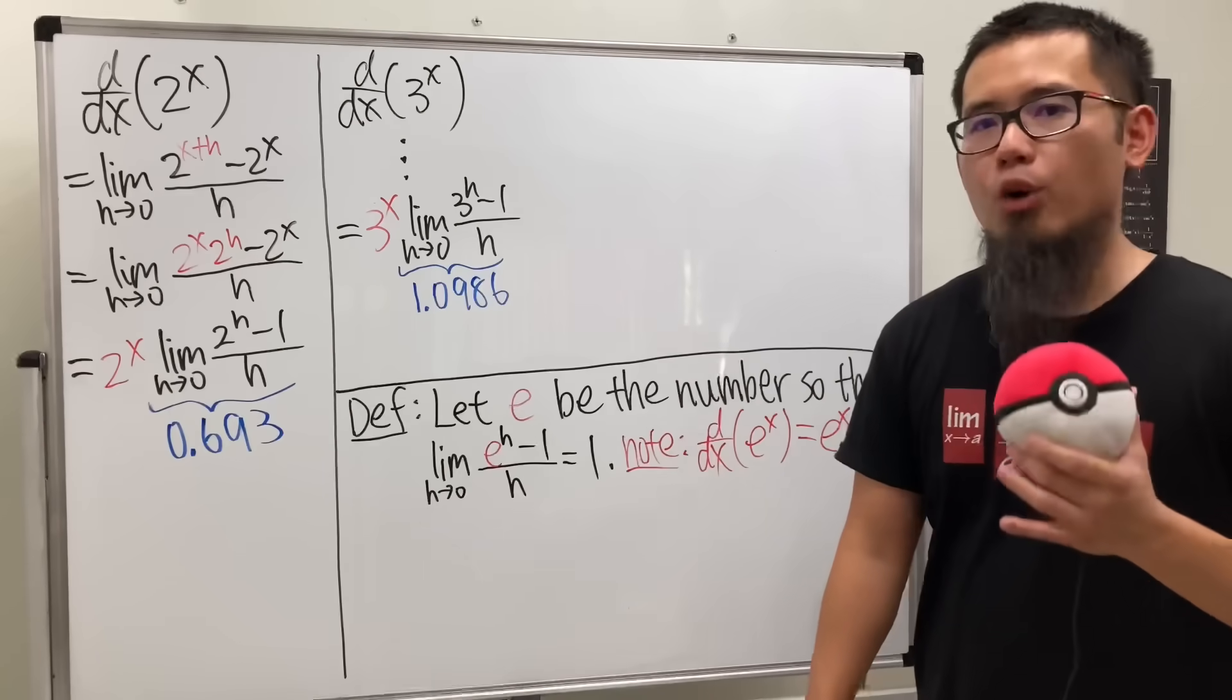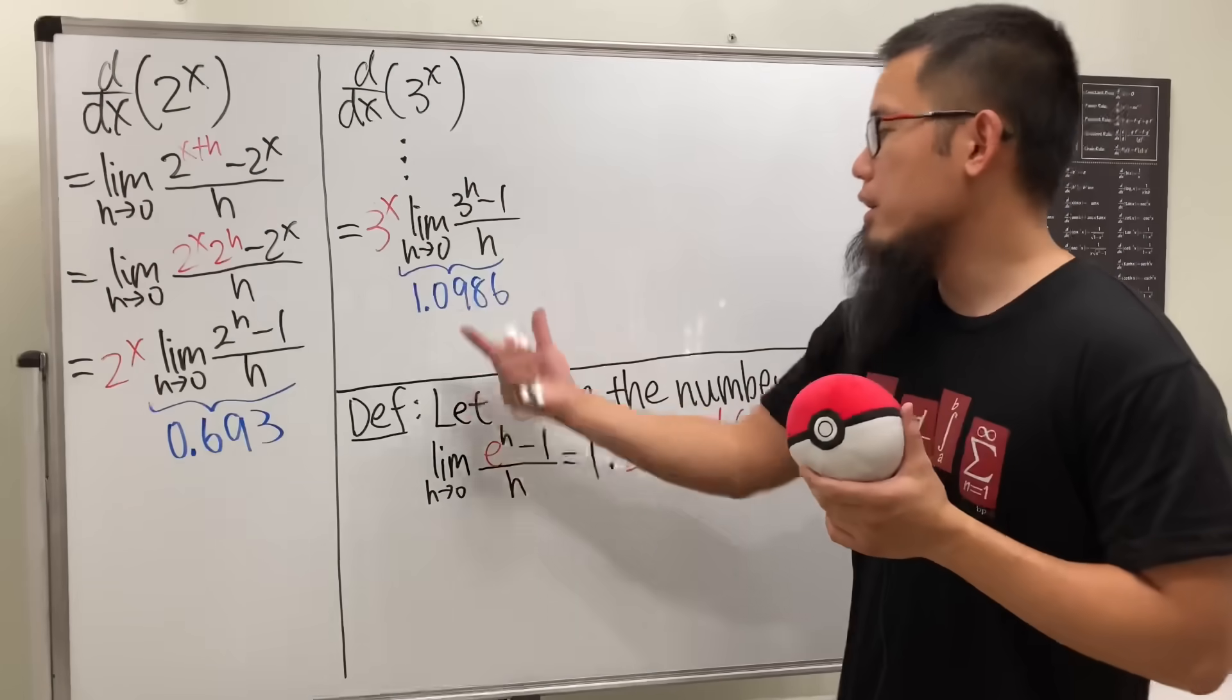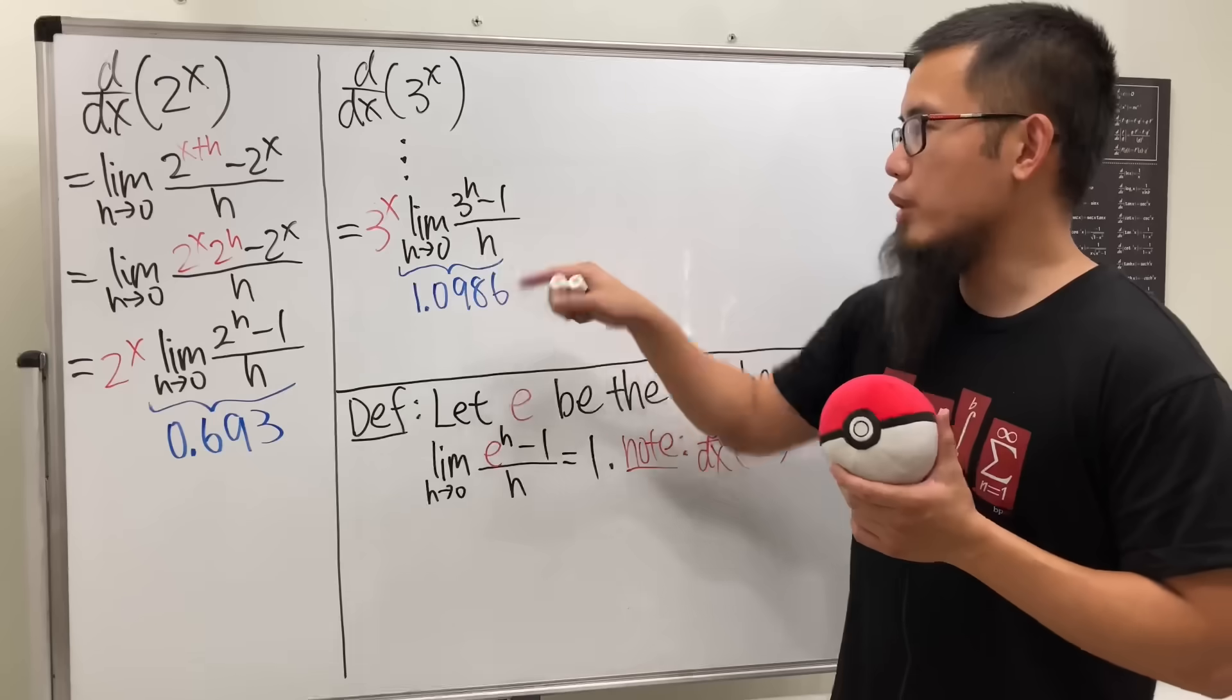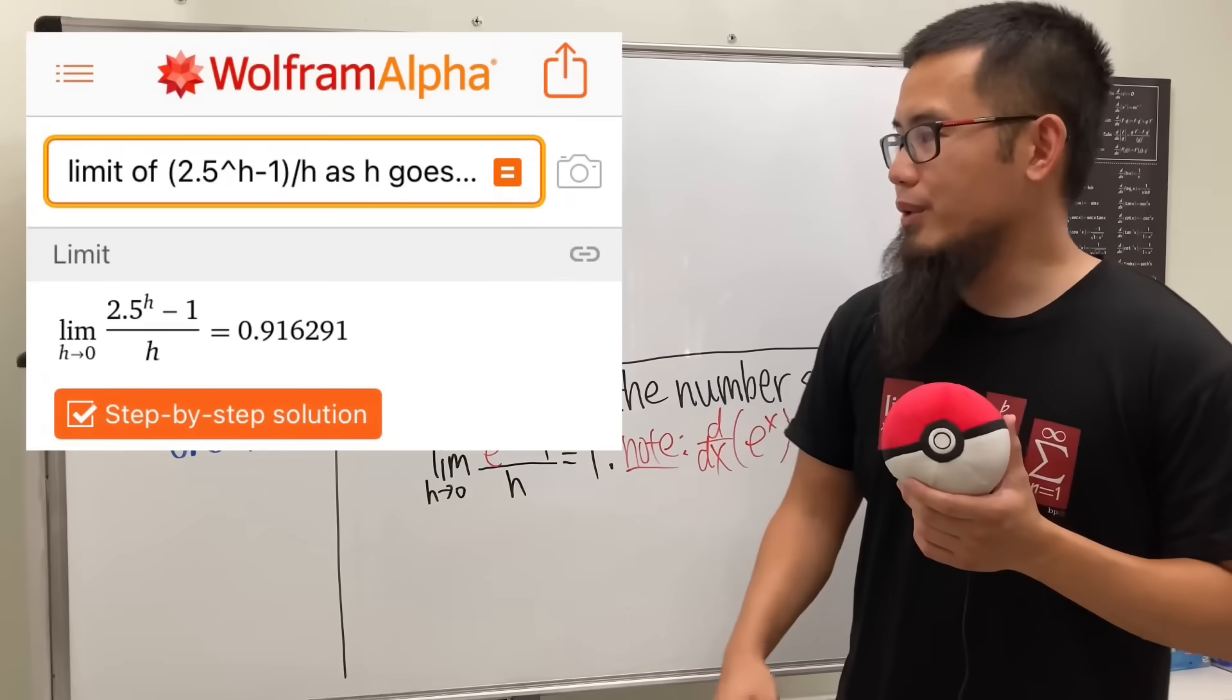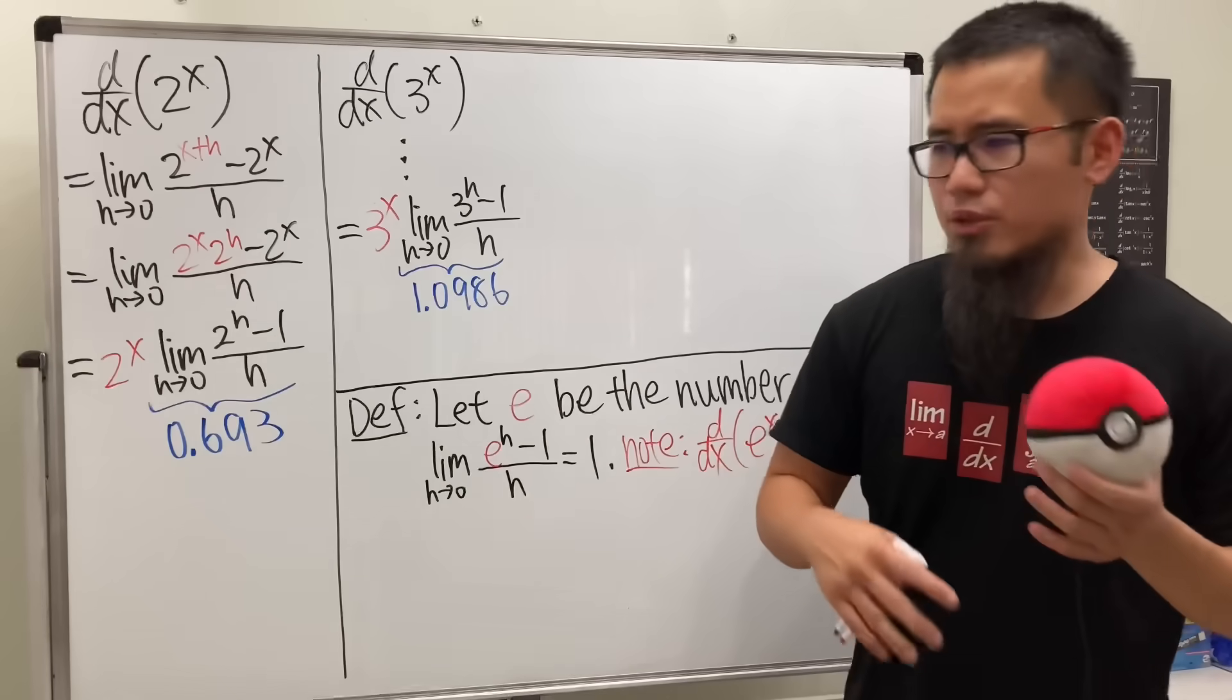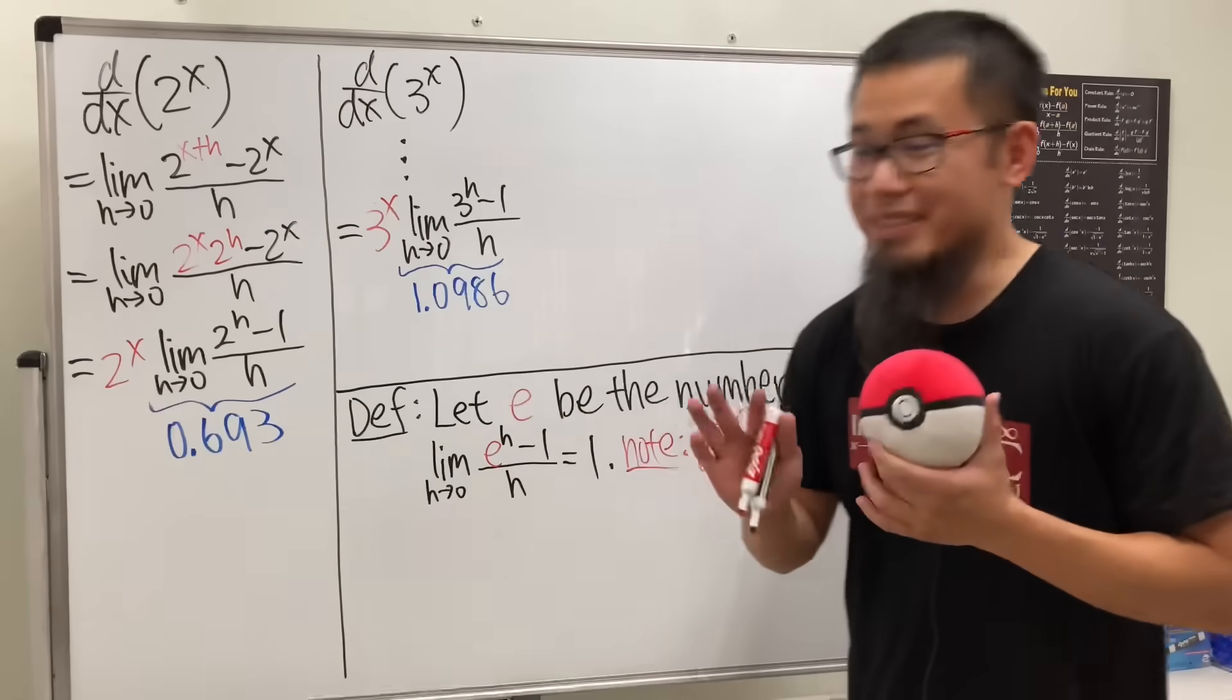But now the question is, how big is the number e? Well, as we can see, when the base was 2, this number was less than 1, and when the base was 3, this number was bigger than 1. So maybe we can do the same thing again, and use 2.5 for the base, and then try to see what kind of limit that it gives us. And you can see it right here. So, you can see that that number is still less than 1. So maybe we can try a number between 2.5 and 3 again, so 2.75, and you can see that. And I know that's a really bad way to approximate e, but I would just say it's a way, all right?